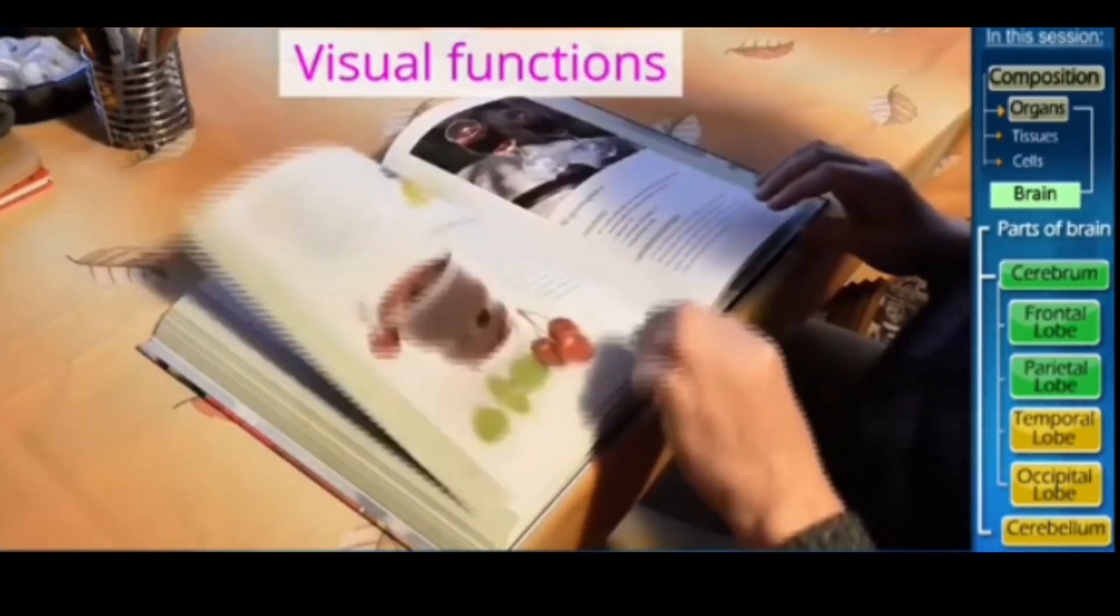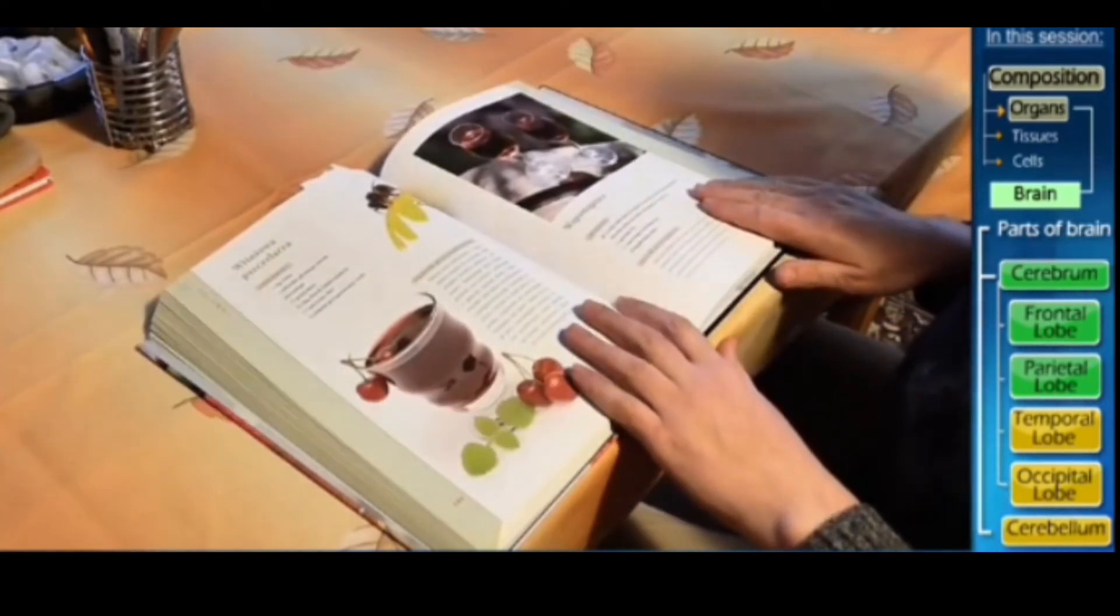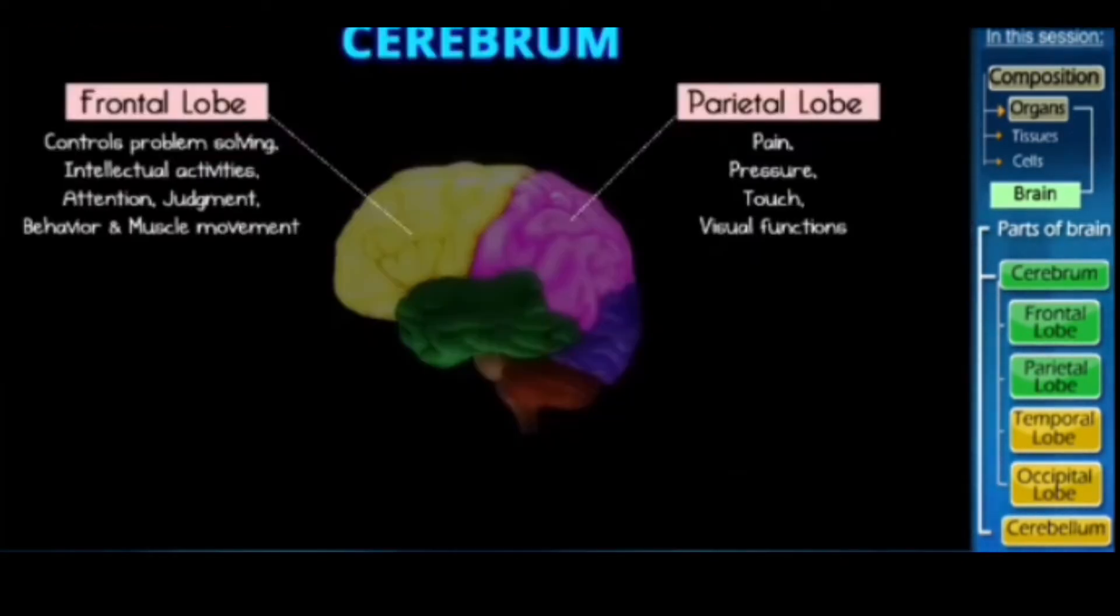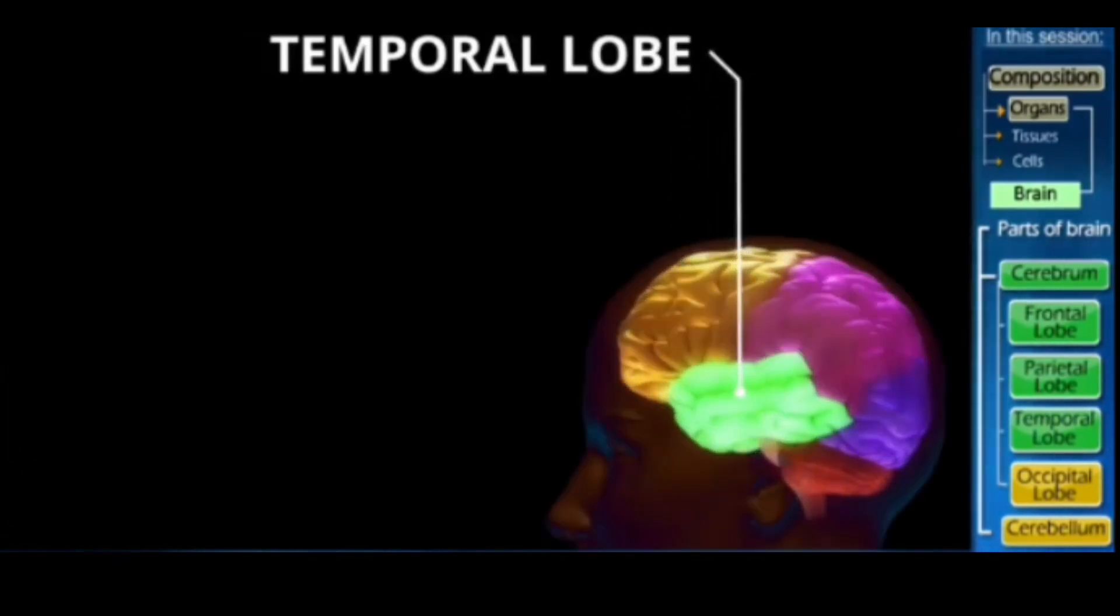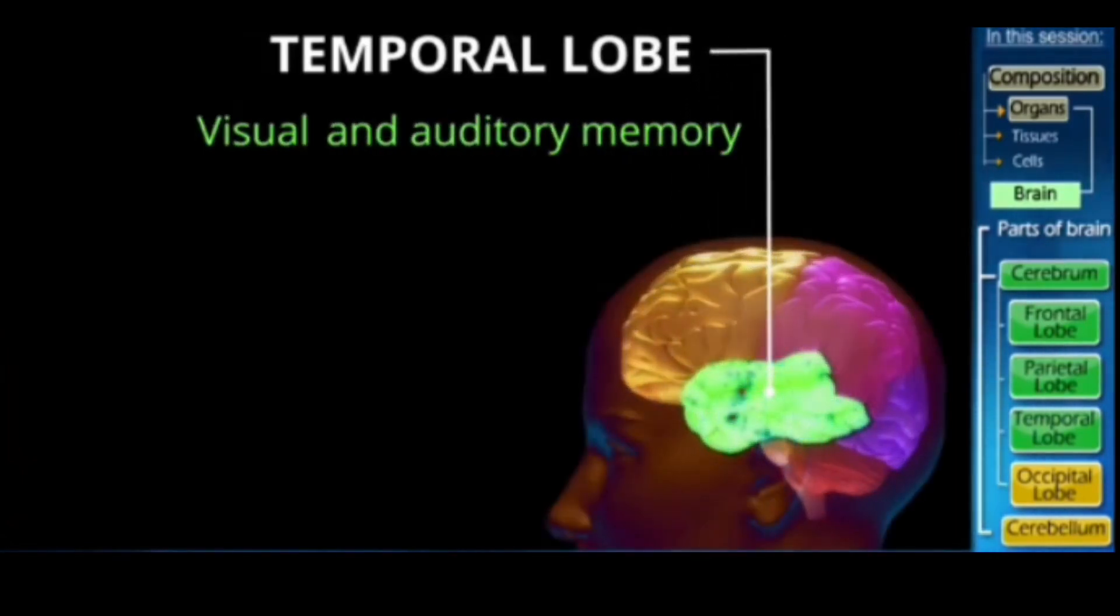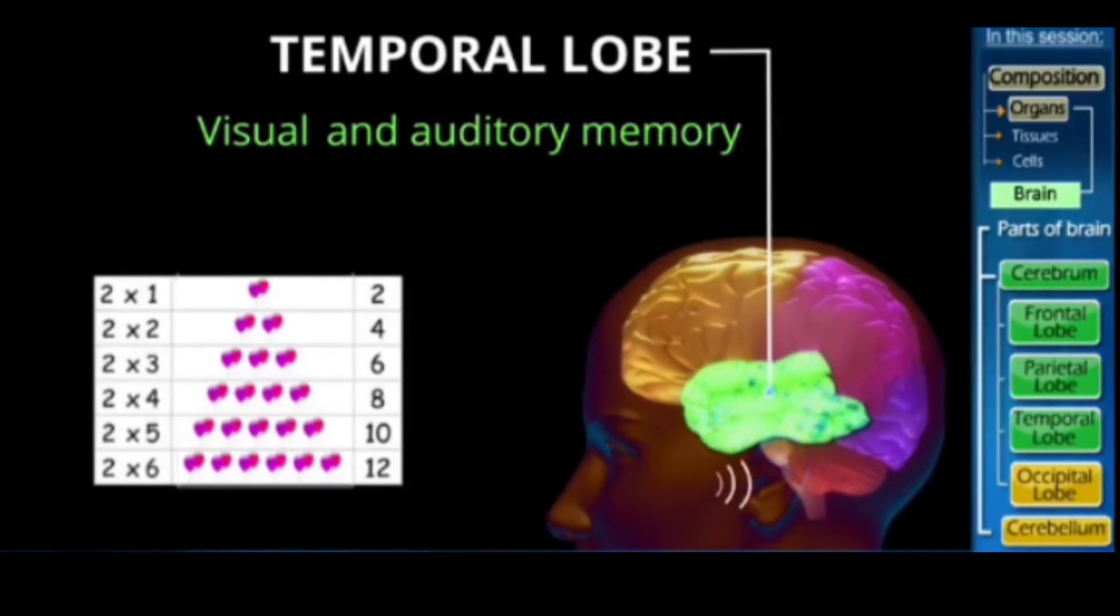It also helps in visual functions such as reading and understanding statements. I'm having fun learning about the lobes in the cerebrum. So let's continue. The next lobe is called a temporal lobe. It controls the visual and auditory memories. So all that you see and hear, that's stored in the form of memories in this lobe.